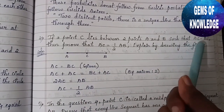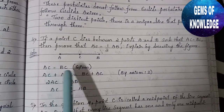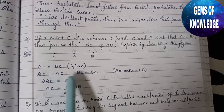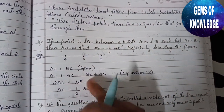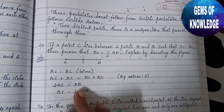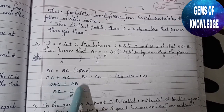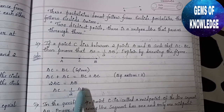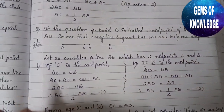Given that AC equals BC, we add AC to both sides: AC plus AC equals BC plus AC. This gives us 2·AC equals BC plus AC, and BC plus AC together equals AB. So 2·AC equals AB, and bringing the 2 to the other side, AC equals one-half of AB. This is what we needed to prove.